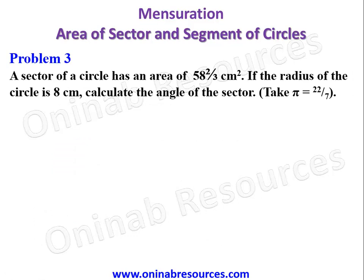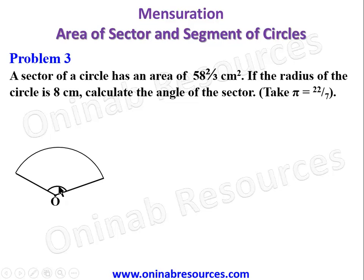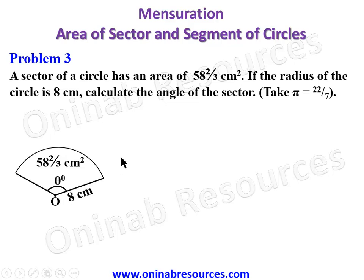Problem 3: A sector of a circle has an area of 58⅔ square centimeters. If the radius of the circle is 8 centimeters, calculate the angle of the sector. Here we are given the area and the radius, and we are calculating the angle theta. The radius is 8 centimeters and the area of the sector is 58⅔ square centimeters.